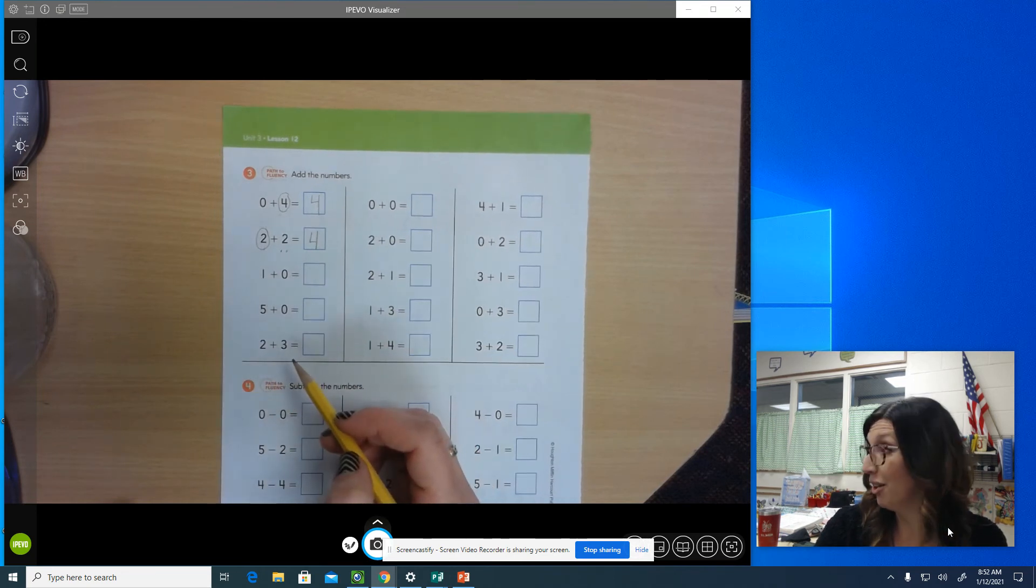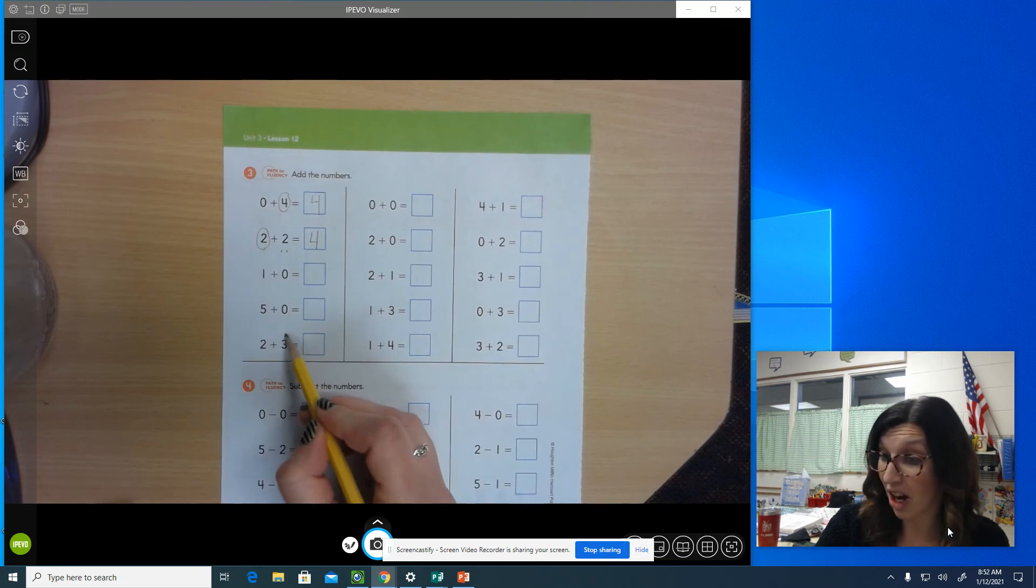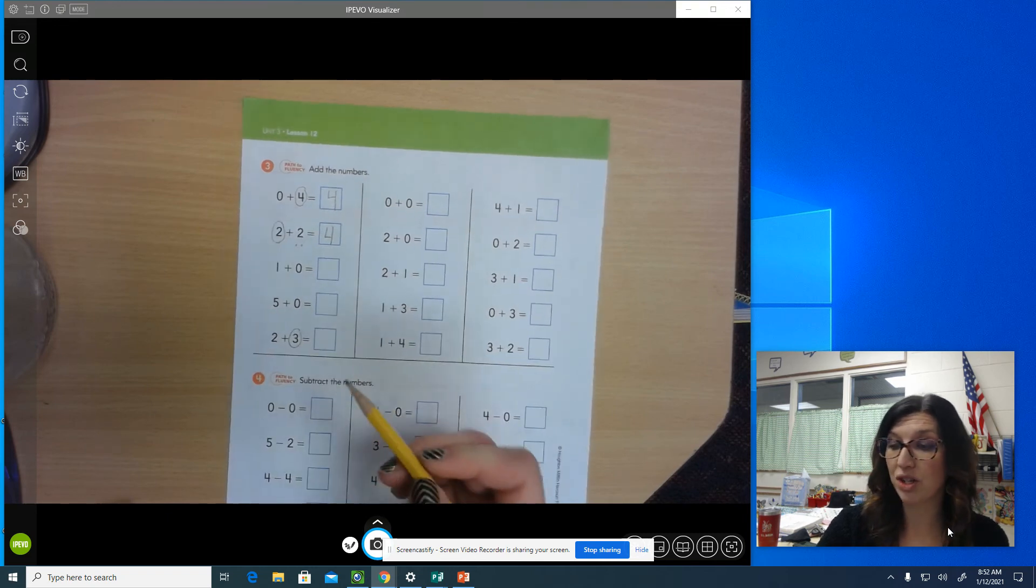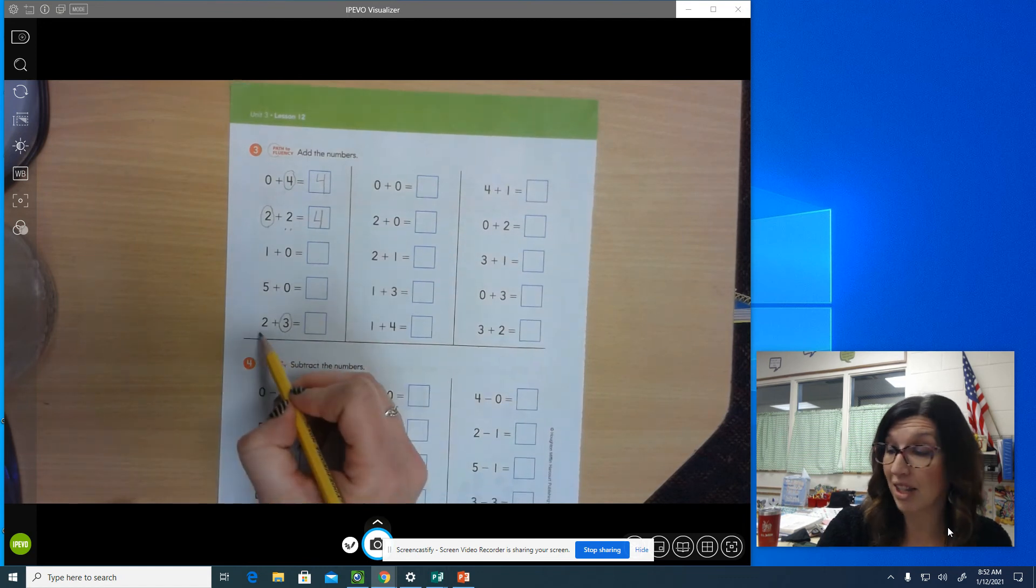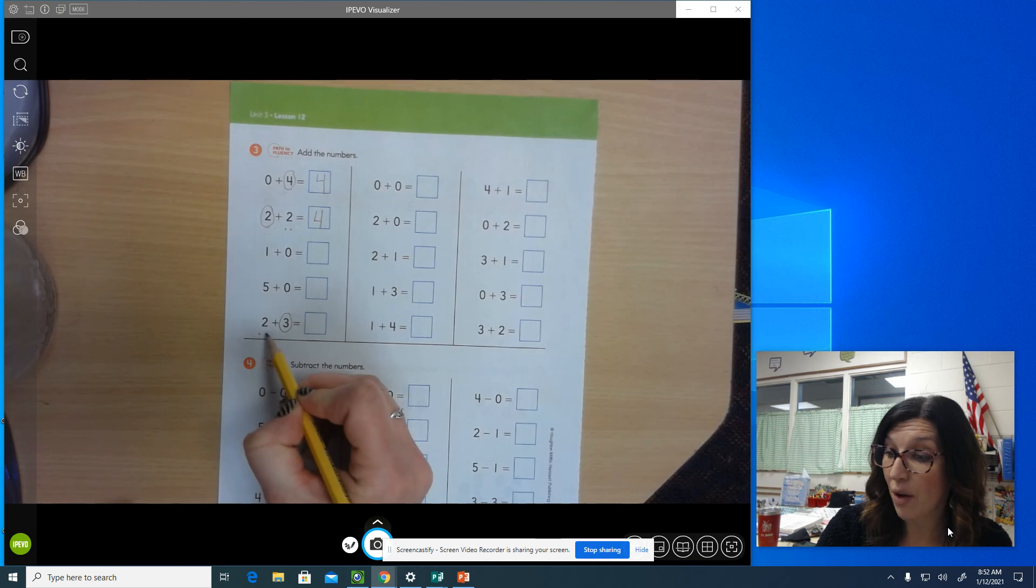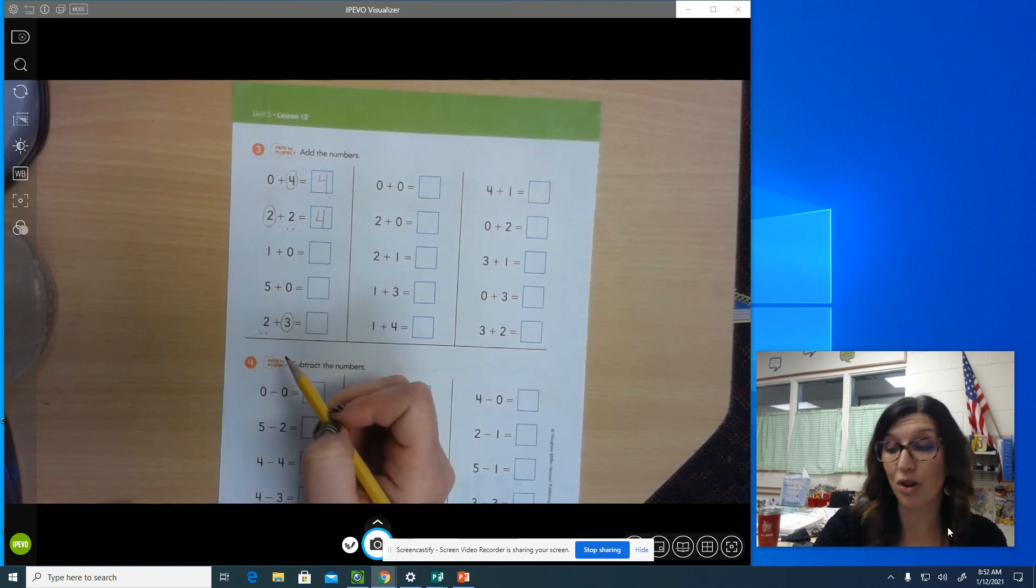Which number is bigger? Three is larger. Three is the greater number. So I'm going to circle the three and then I'm going to draw dots for the other number. How many dots do I draw? Two. I draw two dots. Now I count on and I start by saying the number that's circled.